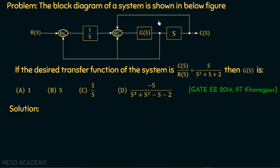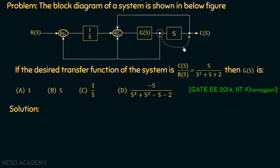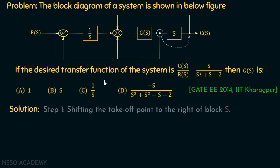Now we will solve this problem using method 1, the block diagram reduction. Observe this block diagram carefully and think from where we can start. If we shift this takeoff point to the right of this block, these two blocks will come in series and we can multiply their gains. So step number 1 will be shifting this takeoff point to the right of this block. If we shift the takeoff point to the right, we need to divide the gain of the block with the takeoff point, and since the gain of this takeoff point is unity, we need to add a block of gain 1/s with this takeoff point.